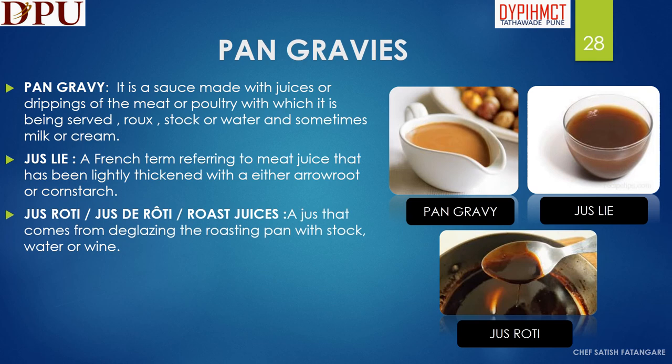In this slide we will discuss about the pan gravies. Pan gravy is a sauce made with juices or drippings of the meat or poultry with which it is being served, and roux, stock or water and sometimes milk or cream. Jus lié, a French term, refers to meat juice that has been lightly thickened with either arrowroot or cornstarch. Jus rôti, or roast juices, is a juice that comes from deglazing the roasting pan with stock, water or wine. Thank you.